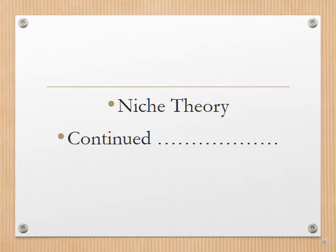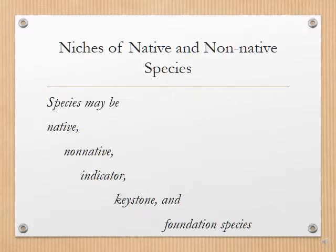Welcome back everyone. Today I will continue yesterday's topic of Niche Theory — the nature of species and their specific roles which they play within an ecosystem. These species have been named as native species, non-native species, indicator species, keystone species, and foundation species.